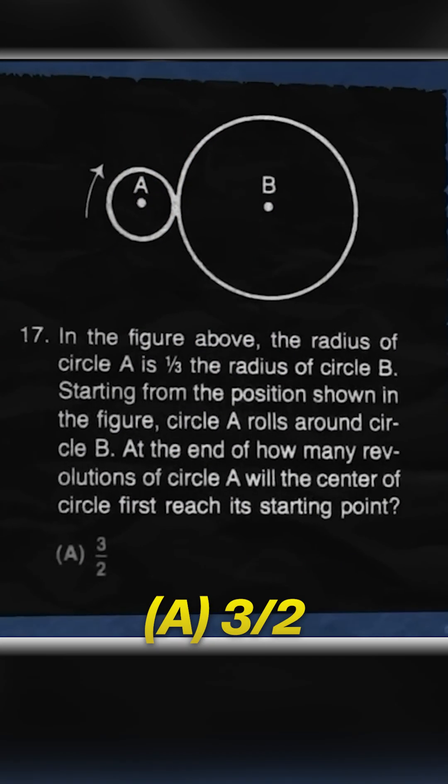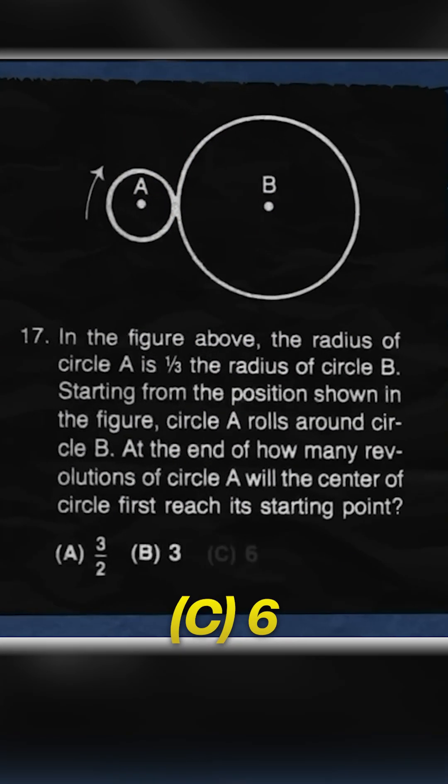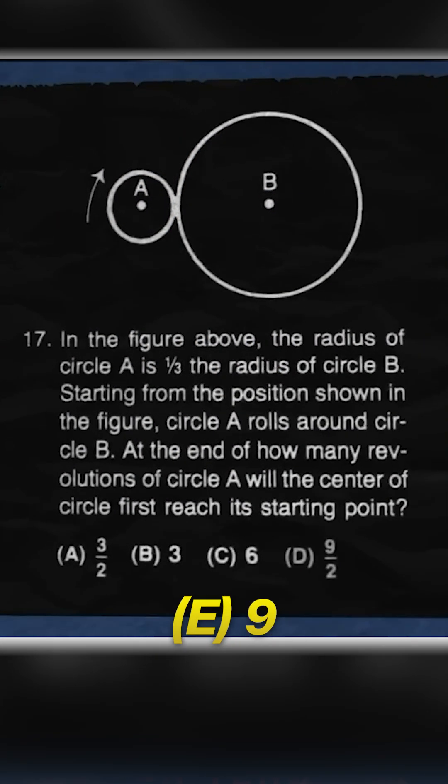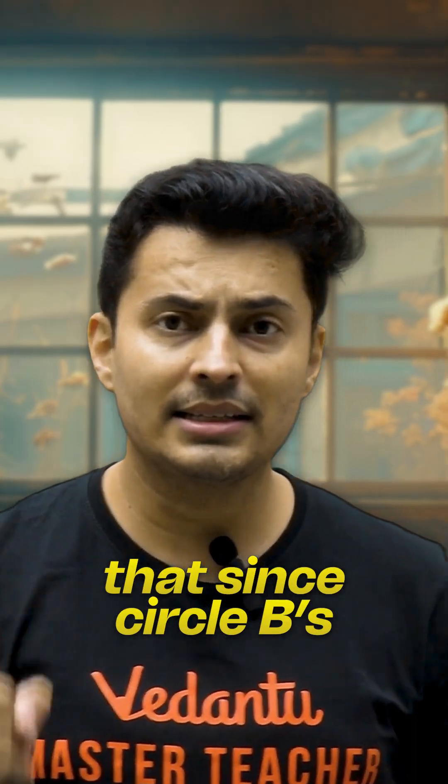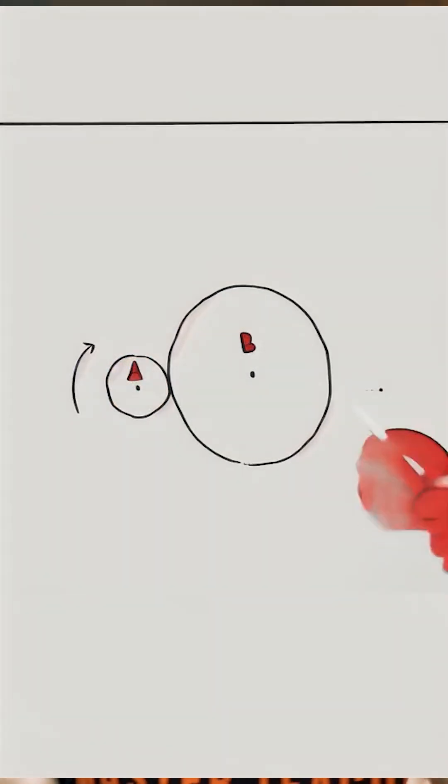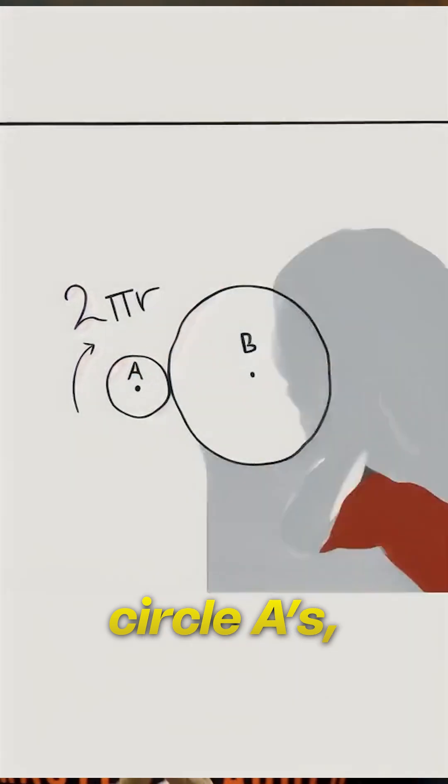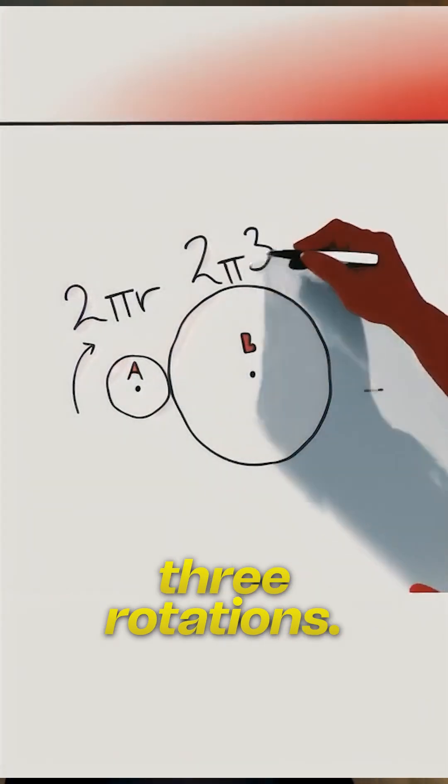The options were 3 by 2, 3, 6, 9 by 2, or 9. Everyone reasoned that since circle B's circumference is 3 times larger than circle A's, it must take exactly 3 rotations.